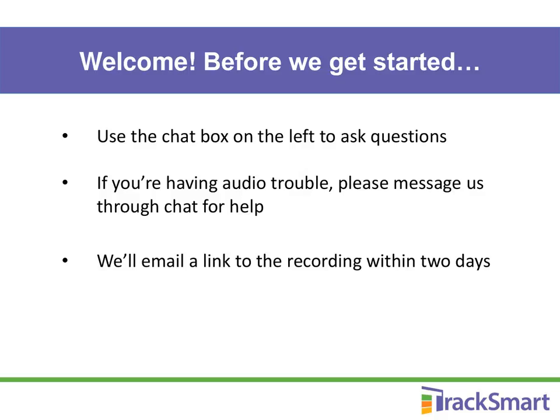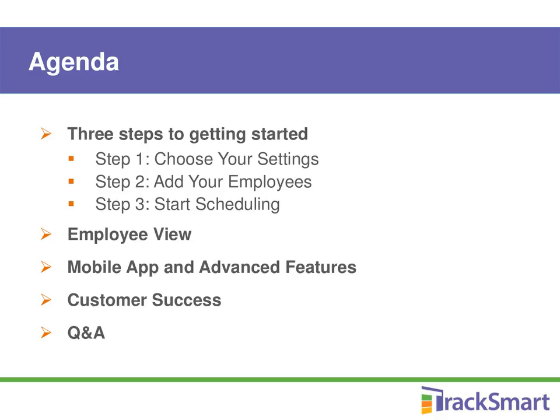Here's a brief overview of what we'll be covering. First, we'll go over the simple three steps to getting started: you'll choose your settings, add your employees so that you have people to schedule, and then just start scheduling. Step one and two involve some setup to save you much more time down the road — this is where you get to add your shifts and schedule employees into them. Then we'll show you how your employees use TrackSmart Scheduling and how you can save time by letting them take care of stuff on their own, all without needing to bug you. You can show them from what you've learned or send them a link to this recording later on.